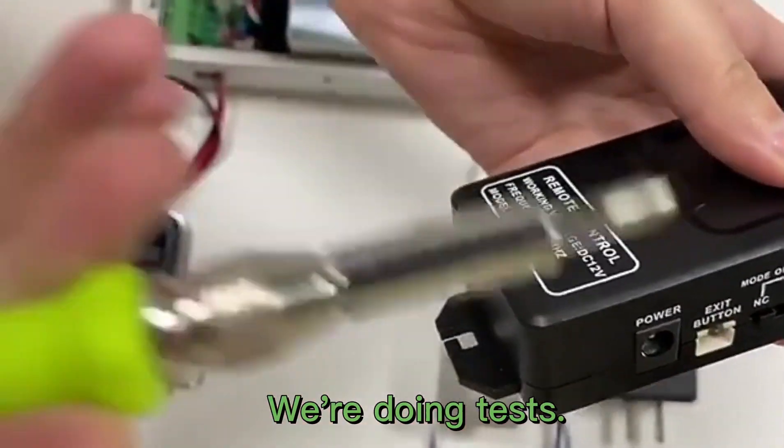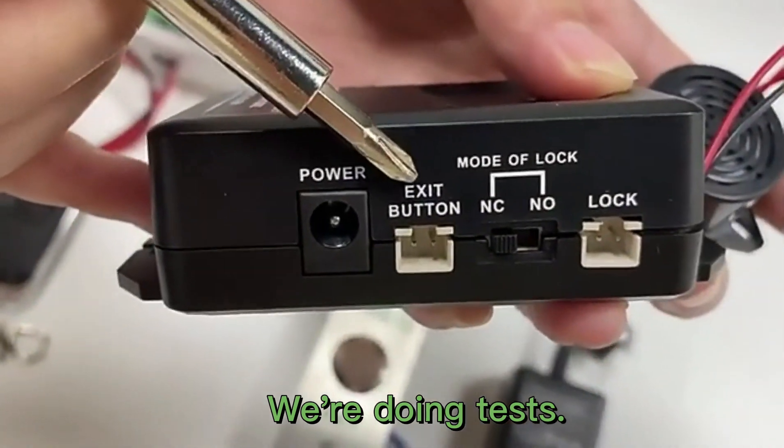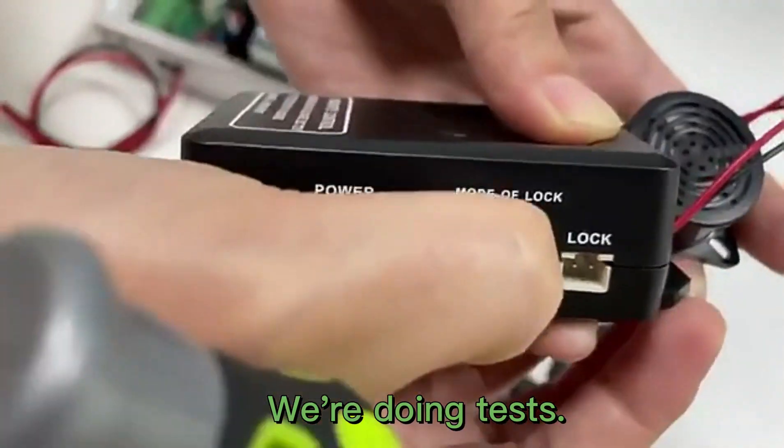This is the receiver. This wiring part is used to connect the power supply. This part is used to connect the exit button. For this part, you can select the mode according to the depth of the lock. This part is used to connect the lock.